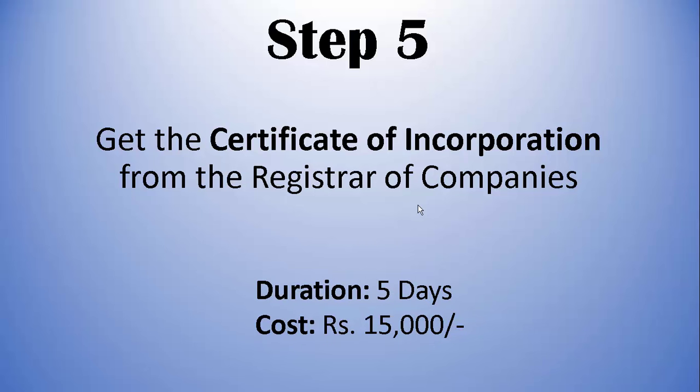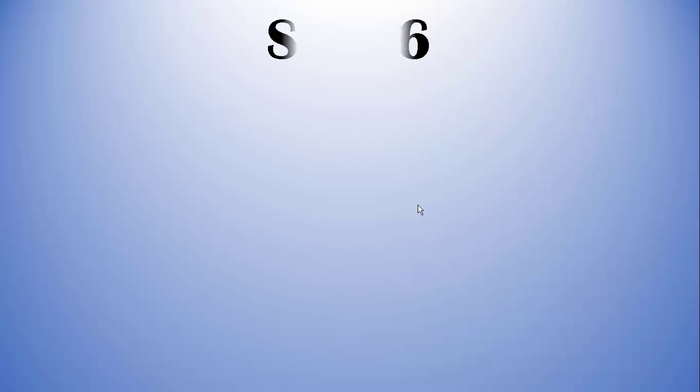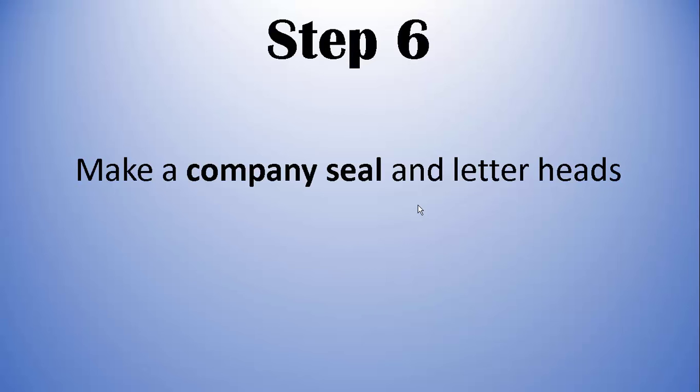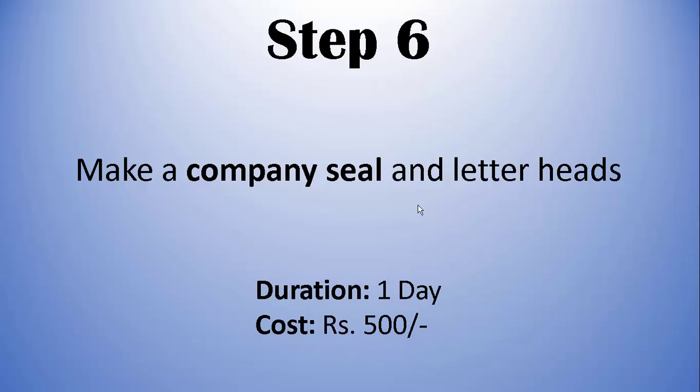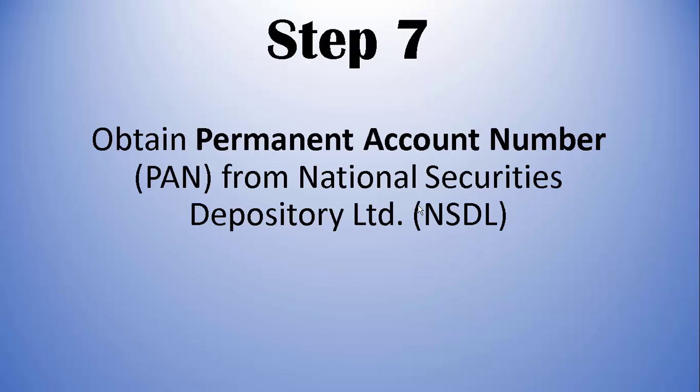Step 6: Make a company seal and letterheads. Duration is one day and the cost involved is rupees 500. Step 7: Obtain a Permanent Account Number from National Securities Depository Limited. You can get it online — they have a website where you can fill in your company information and pay the fees online.